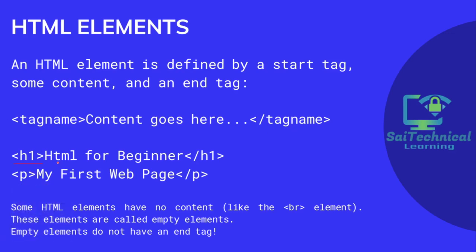For example, the h1 tag contains 'HTML for Beginners' and we close it. Similarly, the p tag is followed by 'My First Web Page' and closed. Some HTML elements have no contents, like the br element — these are called empty elements and do not have end tags.